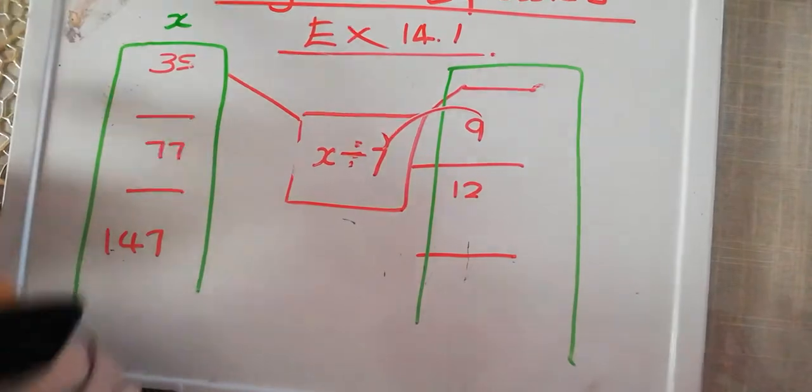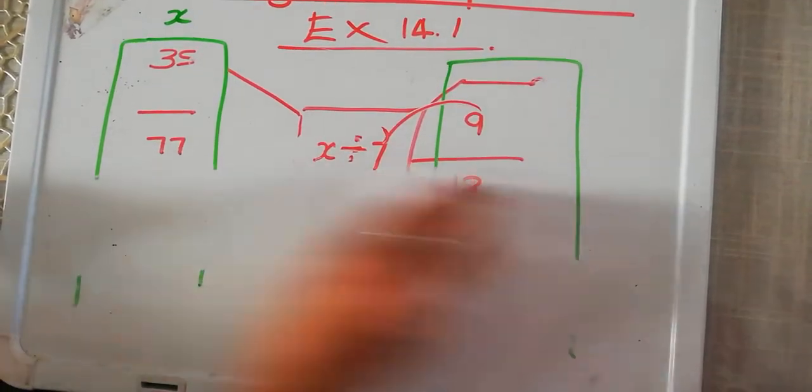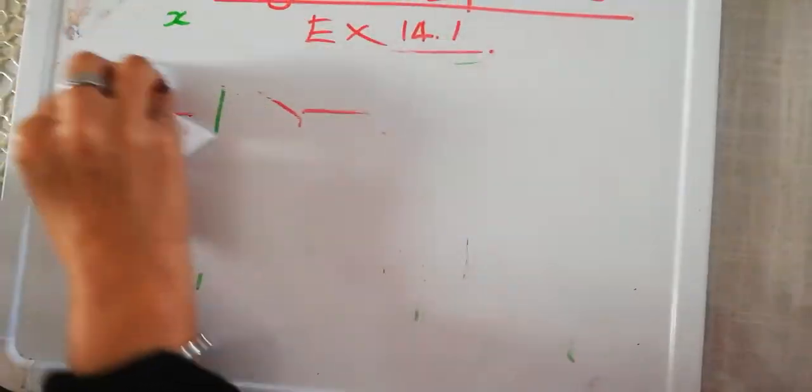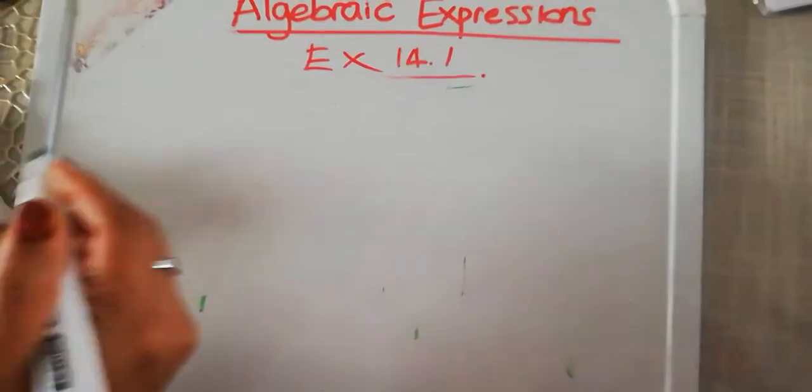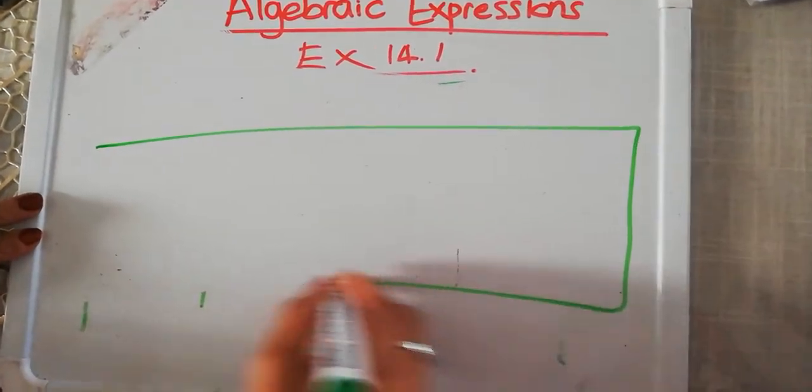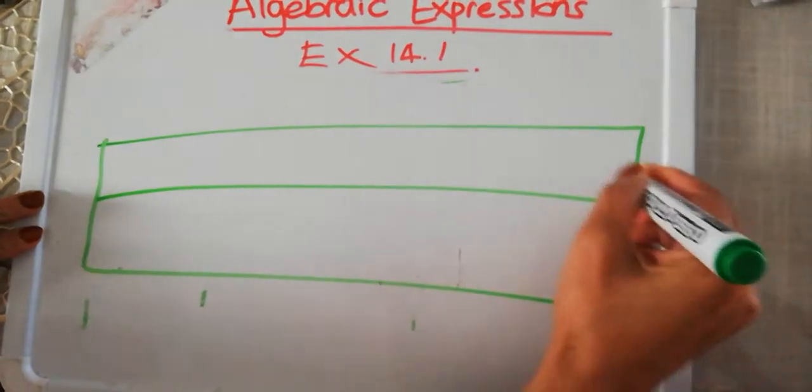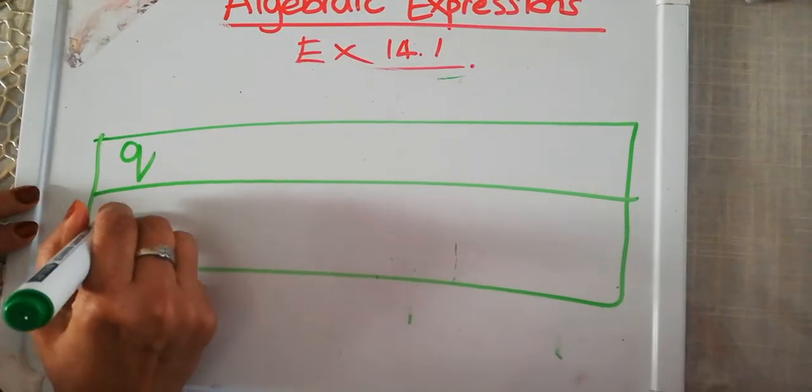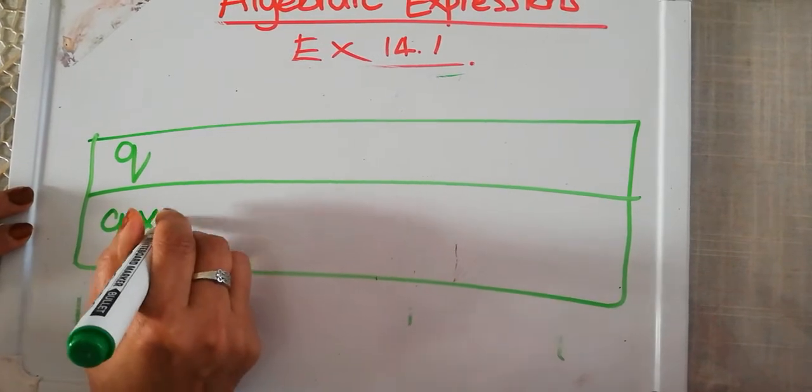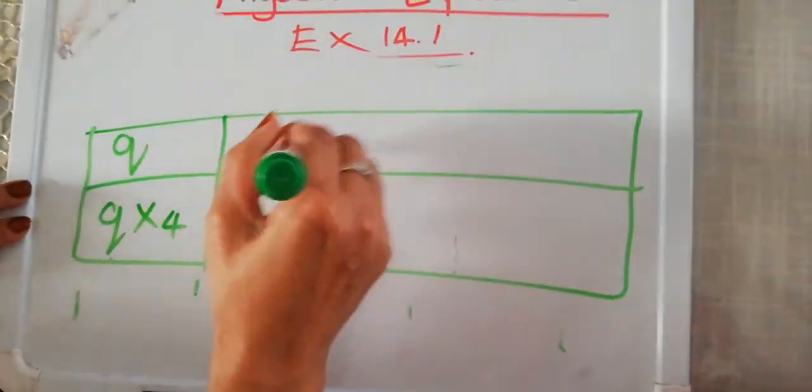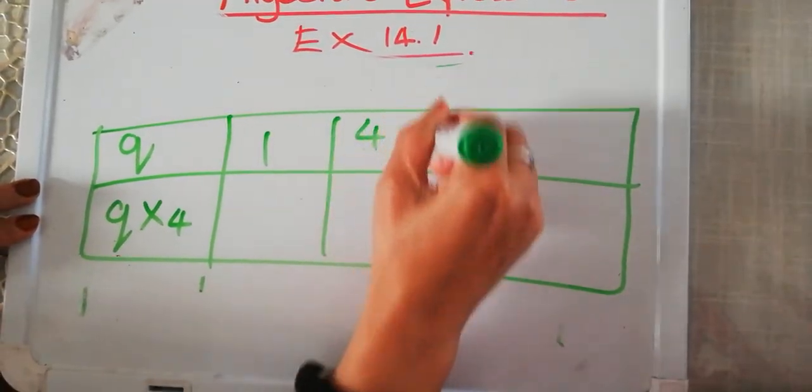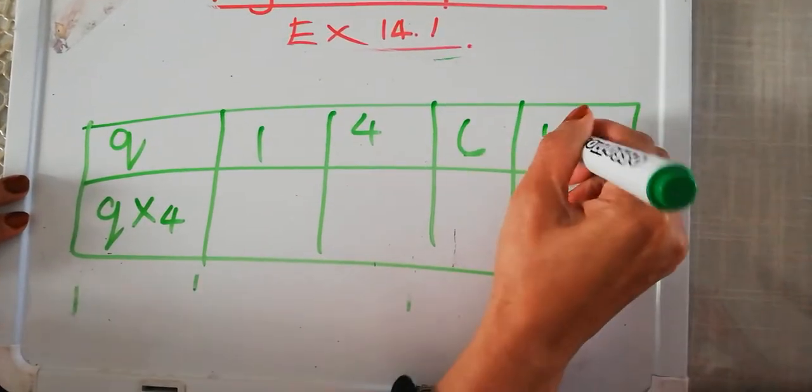The same example can be done in a table. So I'm going to maybe use my own examples, but it's exactly the same like the table in your textbook. So say I have Q here and Q times 4. And I have 1, maybe I have 4, maybe 6, and 10.